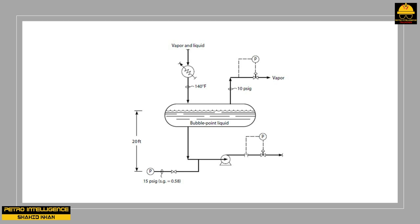Multiply the difference between the two pressures by 2.31 feet for water, then divide by the specific gravity at flowing conditions: 1.00 for water, 0.85 for diesel, 0.50 for propane at the pump suction temperature. Note that the pump suction pressure is the pressure downstream of the pump suction screen, not a pressure read from a control panel screen.